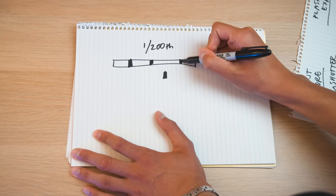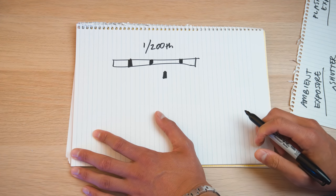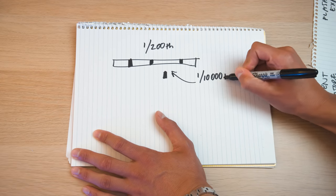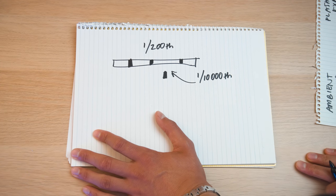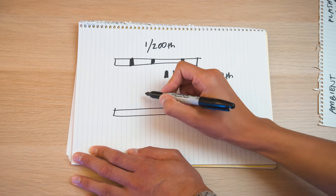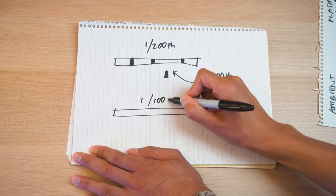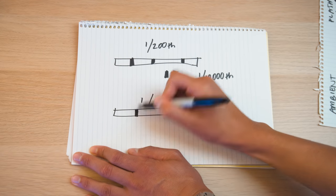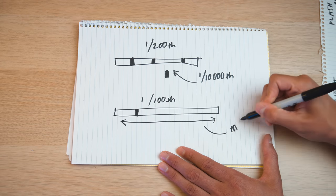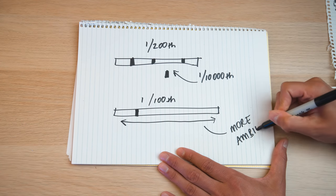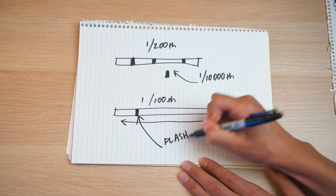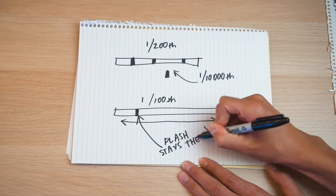Think about it logically: if you make the hole smaller in your lens, less light can get through including flash. If your sensor is less sensitive to light, less light is going to hit it including flash. If we extend the ambient exposure longer and do a one one-hundredth of a second shutter speed, it still doesn't matter — wherever the flash goes in that exposure, the effective power is going to stay the same. The effect of the flash on your exposure will not change even if you add more ambient light into the exposure.